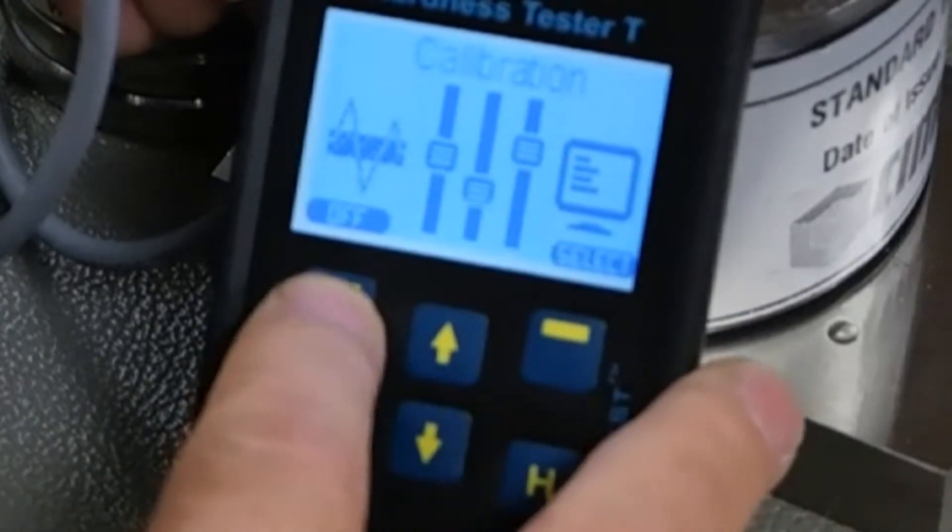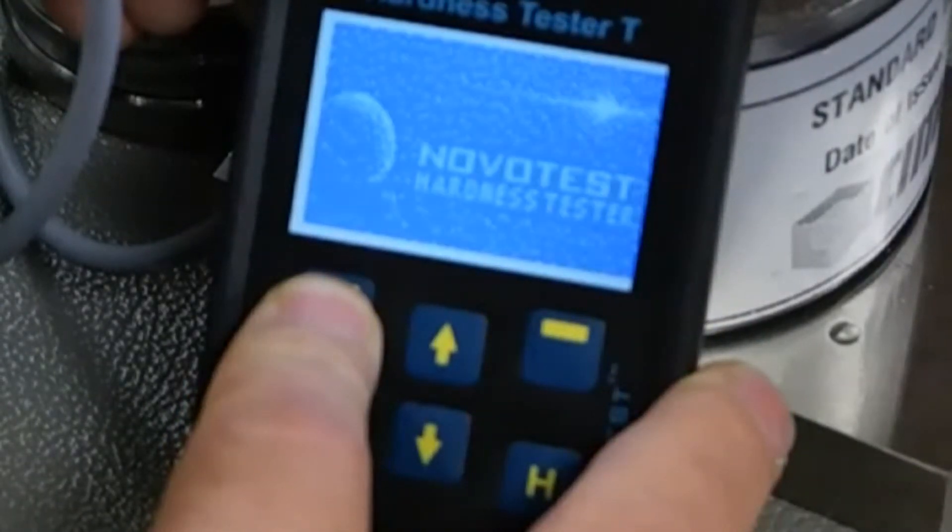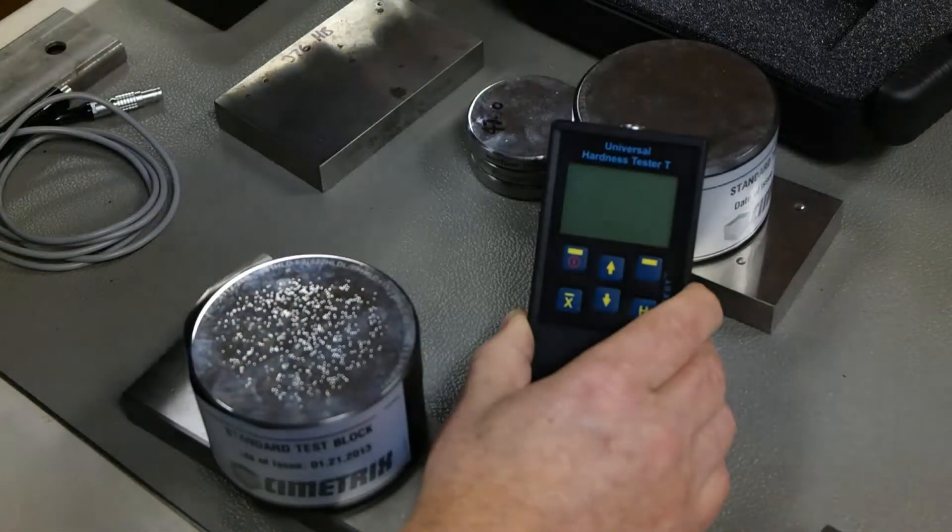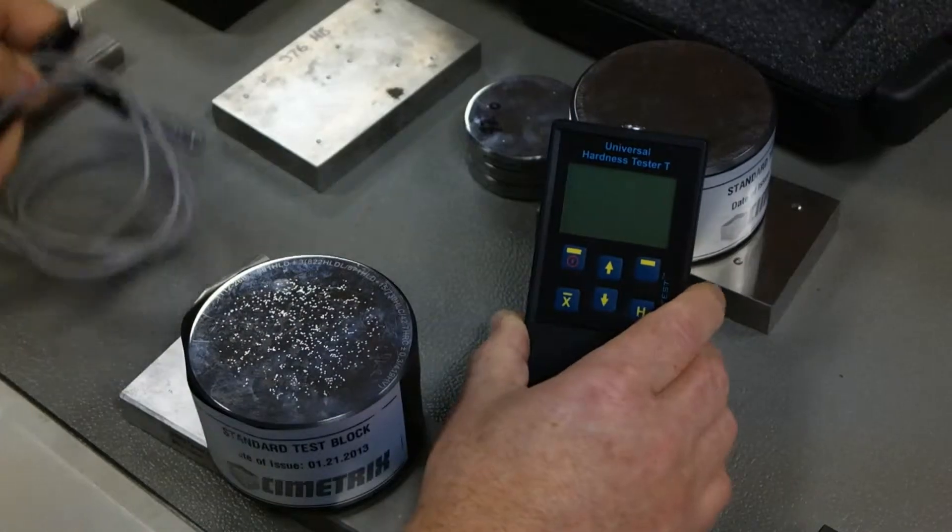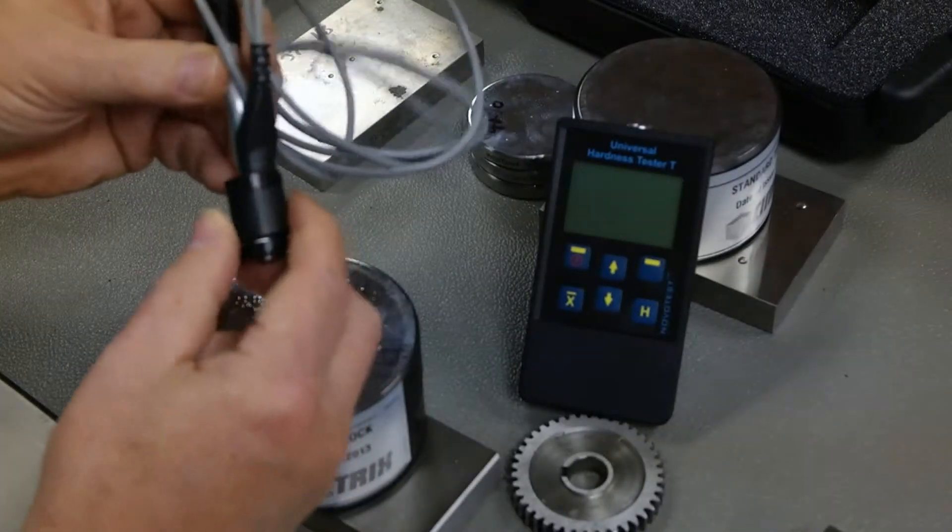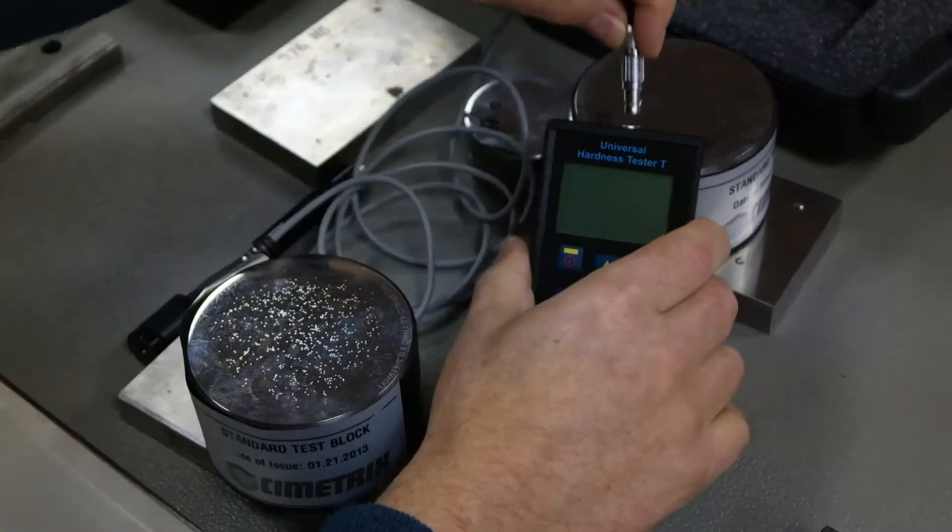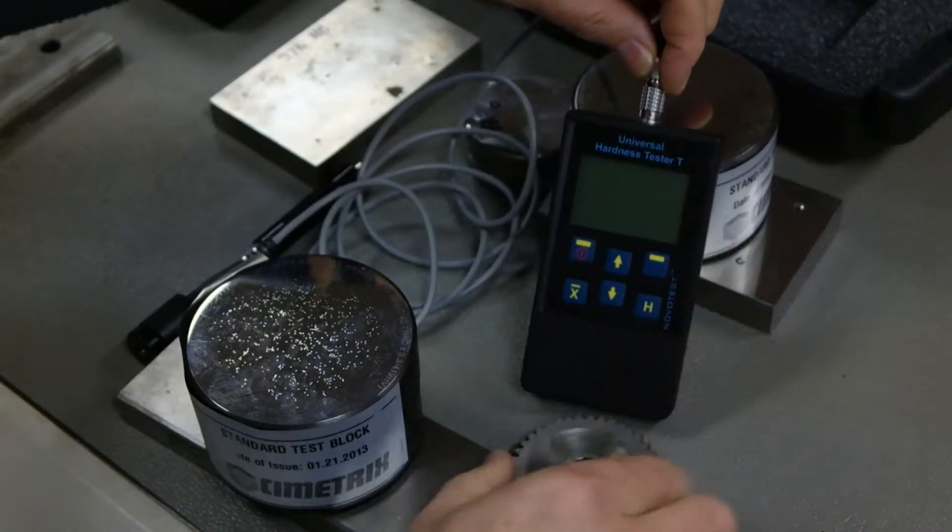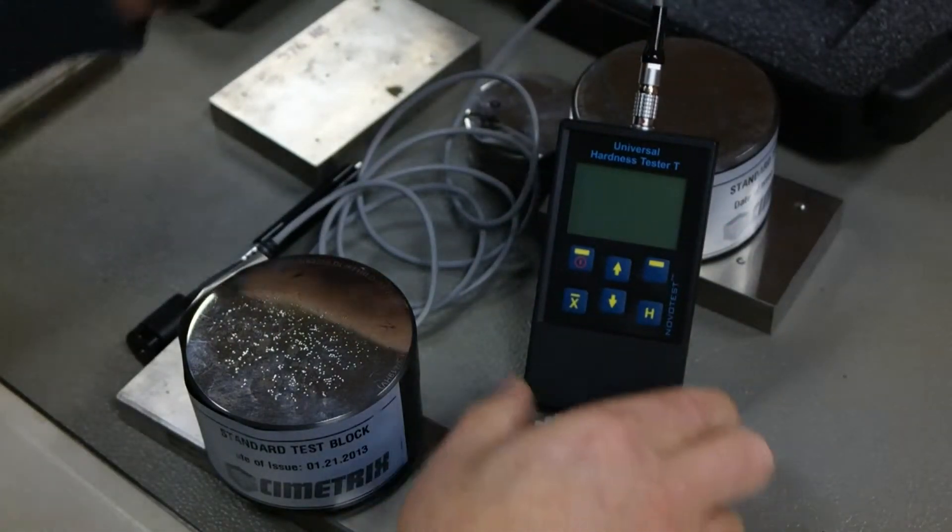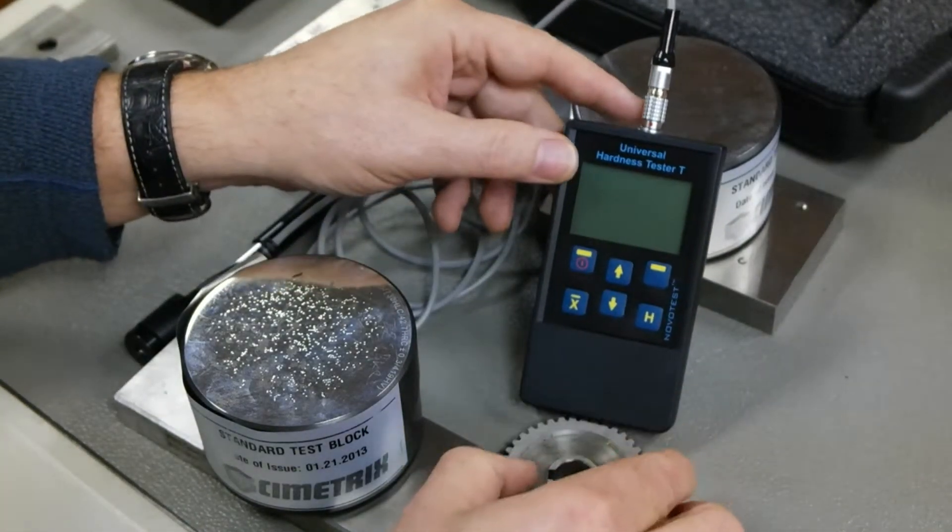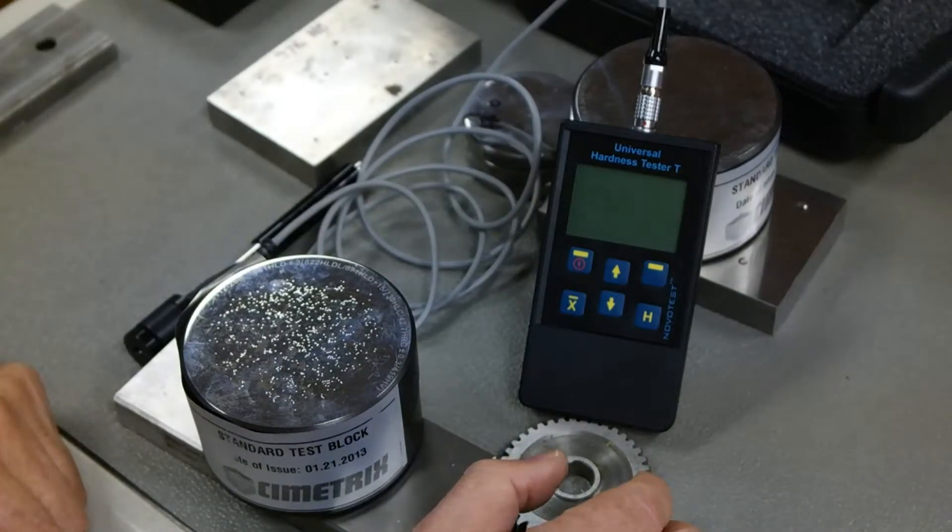I'm going to power the unit off because I want to change the probe to the D-type probe. D-type probe here. It's rebound type. And this extends the capabilities of the unit.